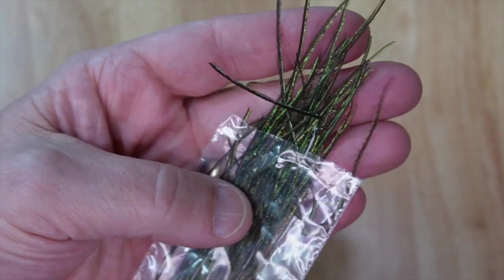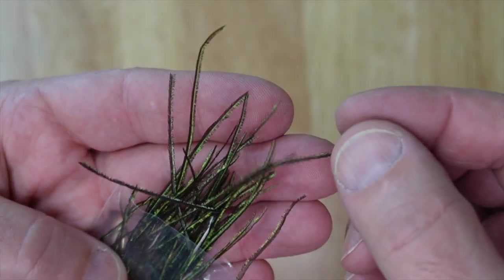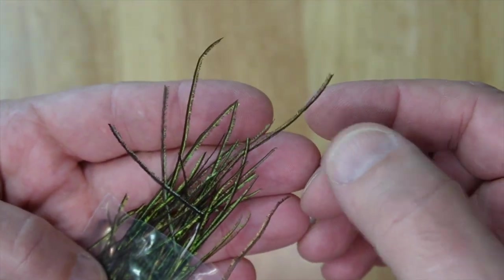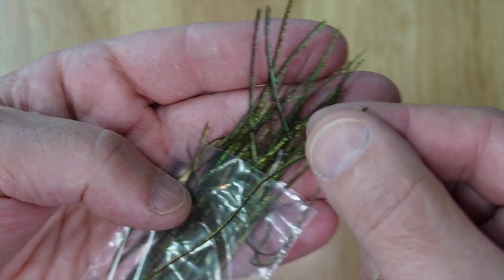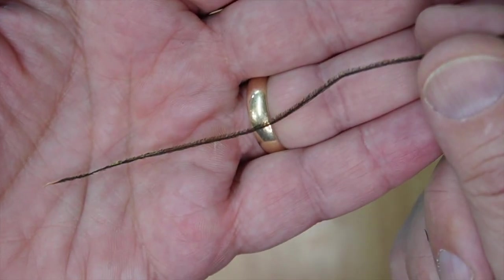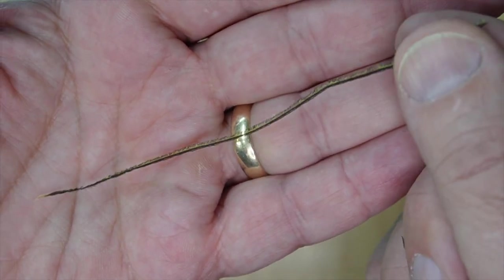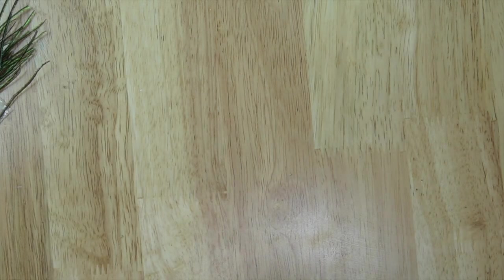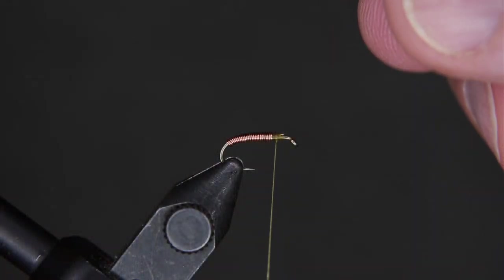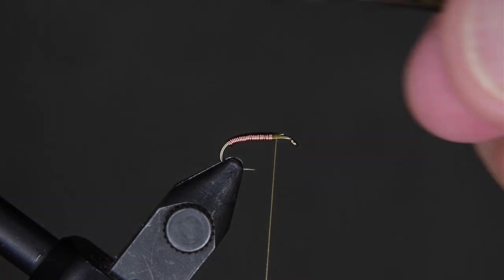We're going to take one piece of peacock hurl. So find the prettiest one you can find. You want nice, thick, long, luminescent barbs on it. That looks pretty good. Once you find one you like, look for the thickest part of the barbs as they come off. And once you find that...